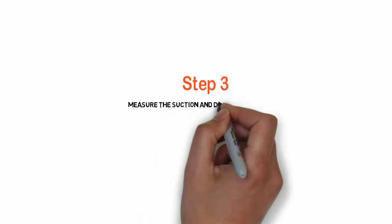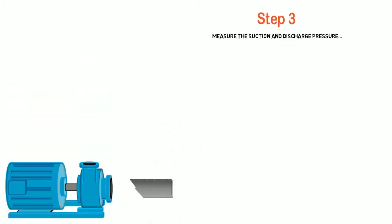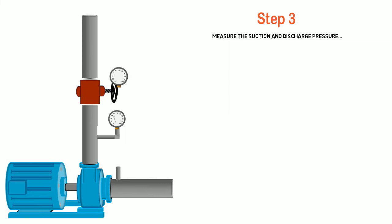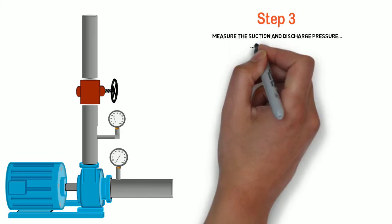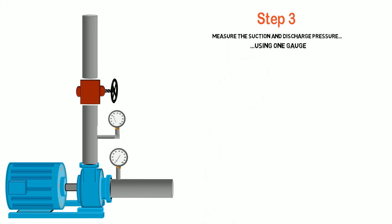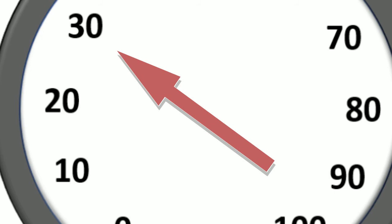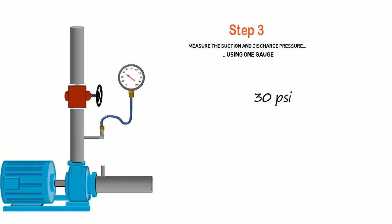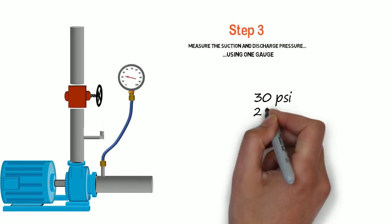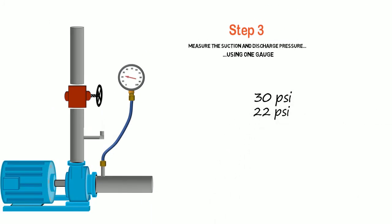Step 3: Measure the suction and discharge pressures. Go to the pump, take off those old gauges that have been sitting there for eons, and use your nice shiny new gauge and length of hose. Connect it to the discharge and take the discharge pressure — in our case, 30 psi. Write it down. Then connect the same gauge to the suction, holding the gauge at the same height. In our case, 22 psi. Write it down.